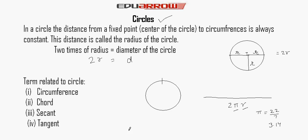The second term is chord. A chord is a line which does not pass through the center. If the line passes through the center, it is called the diameter, and all other lines are called chords of the circle. The name of this chord is PQ.